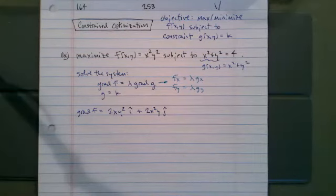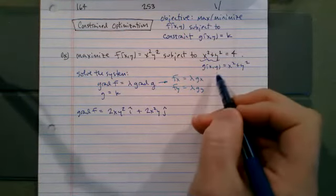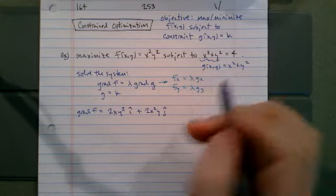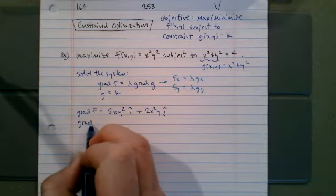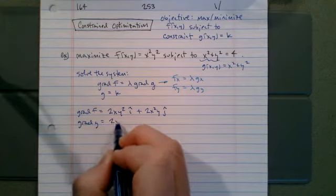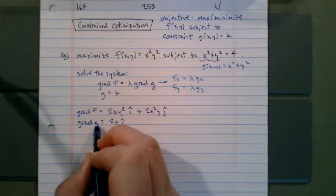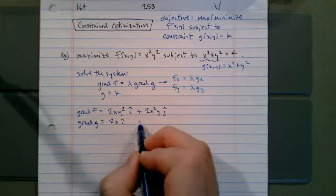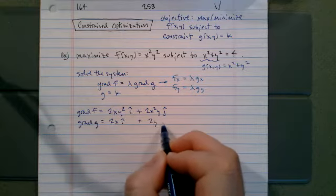There's the gradient of f. Then g is x squared plus y squared, so the gradient of g is 2x times i plus 2y times j.